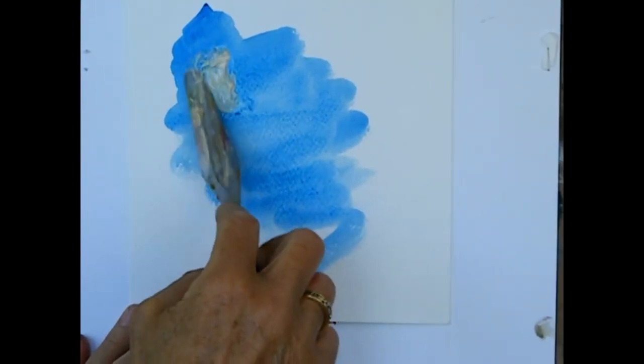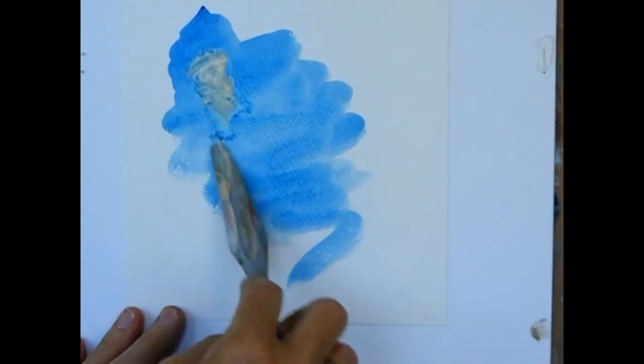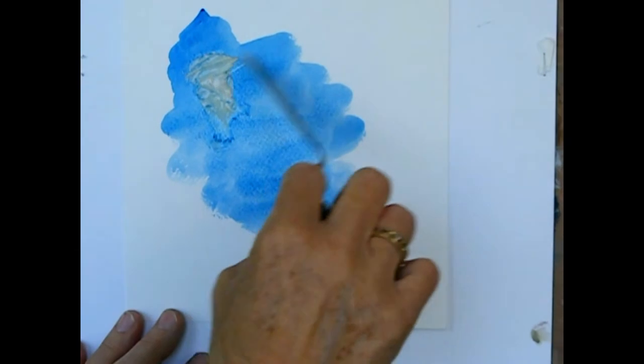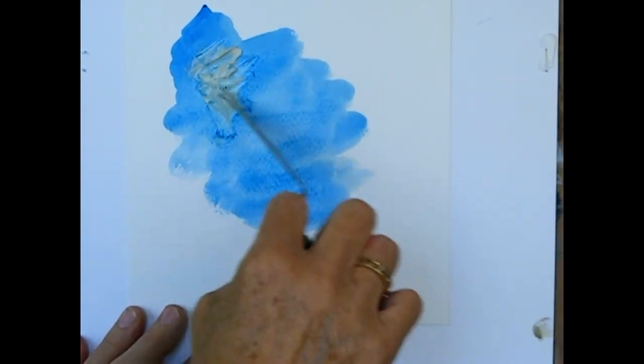This is wet underneath. You see how the Putty is picking up a little bit of the blue color to provide a textural effect with the palette knife.